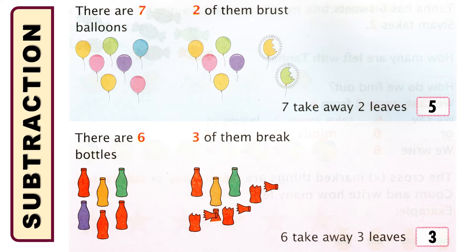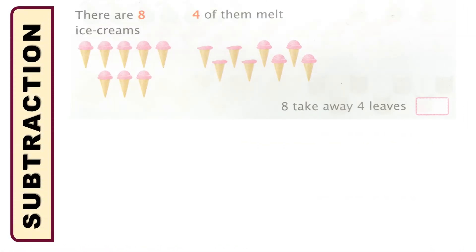Let me show you more examples. You can see in the left part there are eight ice creams and four of them were melted. That means how many ice creams remain? If you count, there are one, two, three, four — four ice creams remain. It means that eight take away four leaves four.